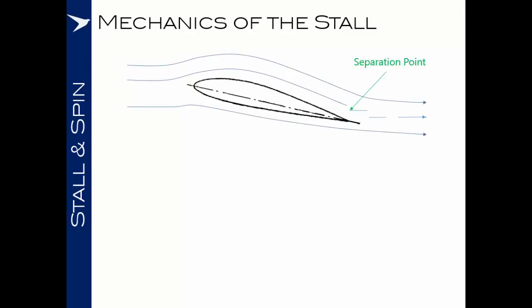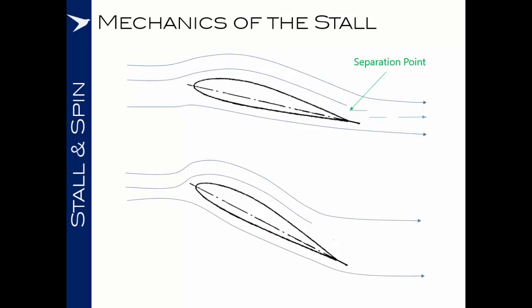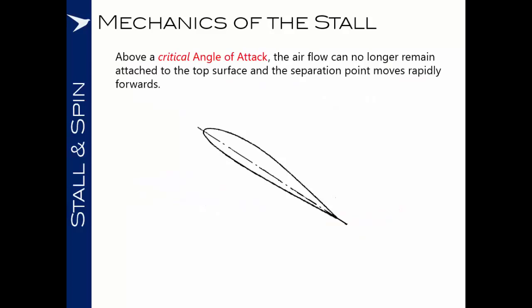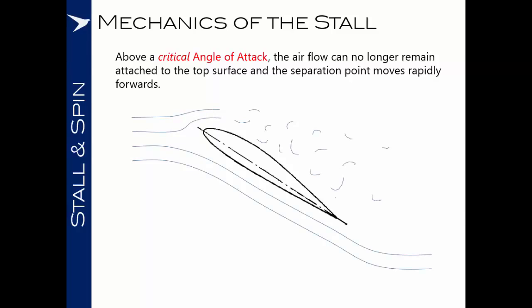So what is happening at the stall? Here we have a wing in normal flight. The airflow, whilst we consider it as smooth streamlines in simplified diagrams, actually starts to separate from the airfoil towards the trailing edge of the wing. At low angles of attack this separation point is very close to the trailing edge. As we increase the angle of attack, the separation point starts to move forwards. Once above the critical angle of attack, the airflow can simply no longer remain attached to the top surface of the wing and the separation point moves rapidly forwards towards the leading edge.